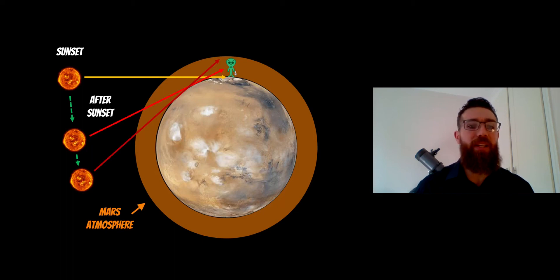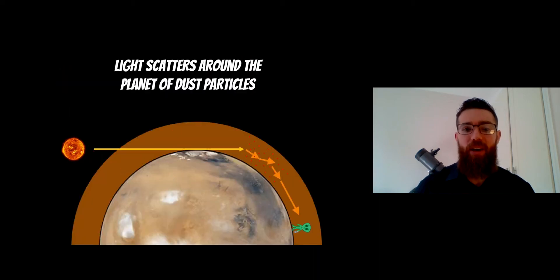So what's different with Mars compared to Earth? Mars has a lot of dust in its atmosphere—small dust particles. As sunlight passes through the atmosphere, the light is scattered off those dust particles and is actually able to go further around the planet.